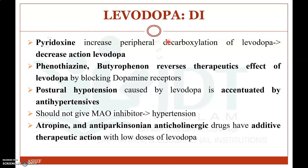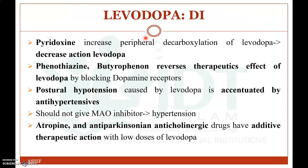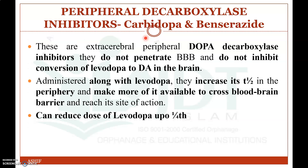Regarding drug interactions of levodopa: pyridoxine increases peripheral decarboxylation of levodopa, decreasing its action. Phenothiazines and butyrophenones reverse the therapeutic effect of levodopa by blocking dopaminergic receptors — these are antipsychotic drugs which block D2 receptors. Postural hypotension may be accentuated by antihypertensives. The main use of levodopa is for treatment of Parkinsonism.